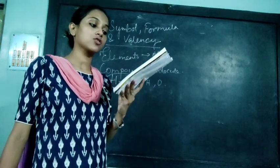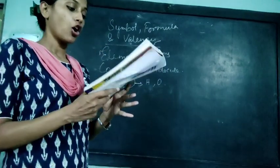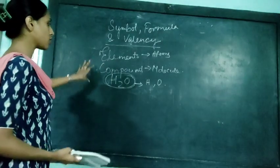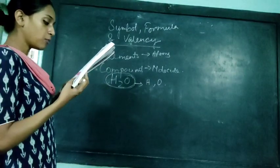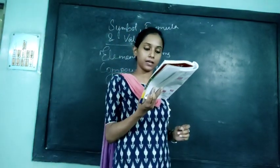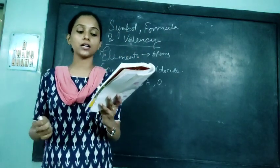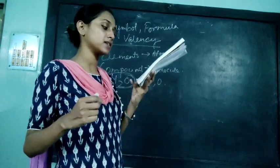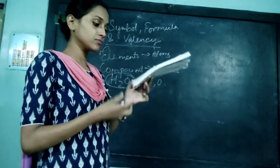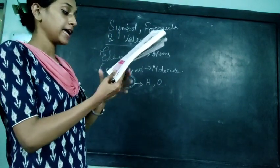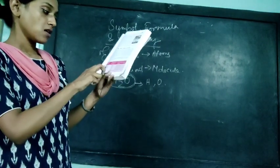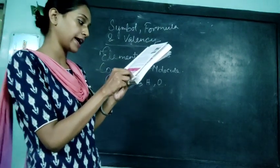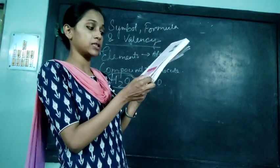A molecule of a particular compound has all the characteristics and properties of that compound. So a water molecule has all the characteristics of water. A molecule is formed when two or more atoms combine in a definite proportion. The number of each atom in a molecule can be determined by analysis in the laboratory. Below we have a list of compounds and the elements present in each of their molecules, along with the name of atoms present and the number of atoms of each element present in each molecule.